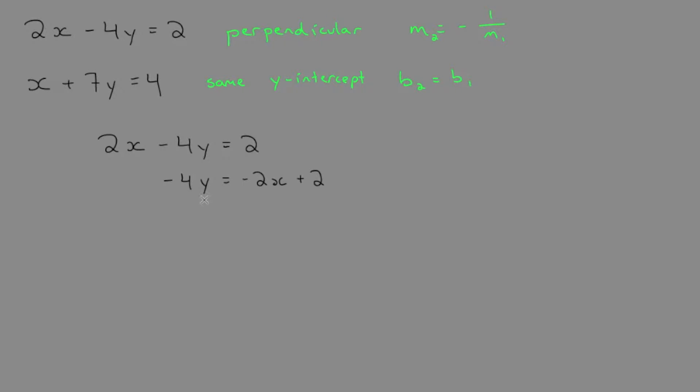Let's divide everything by negative 4. You can see this cancels, which isolates y. This gives us 1/2 x minus 1/2.